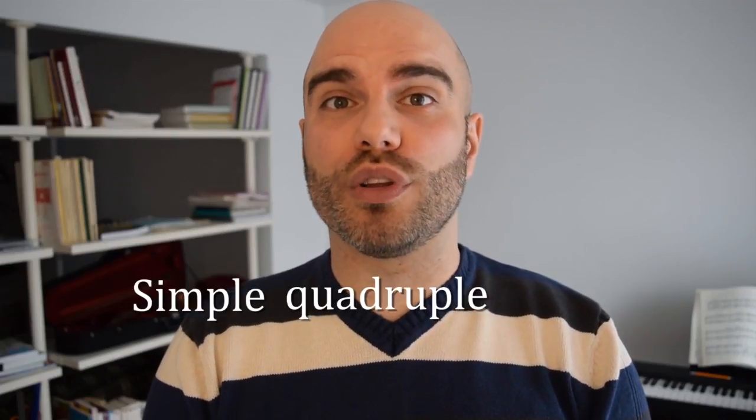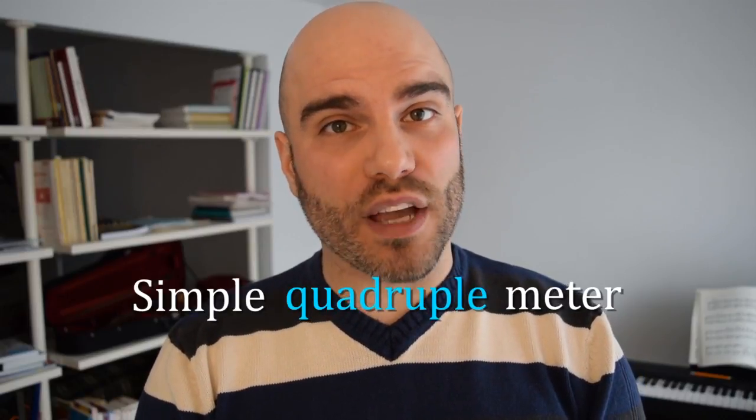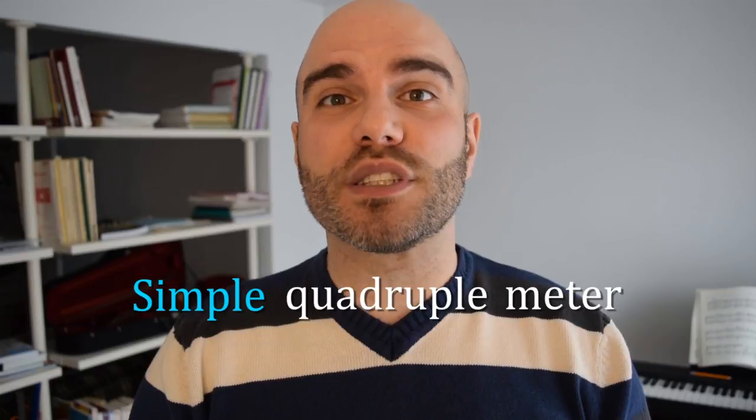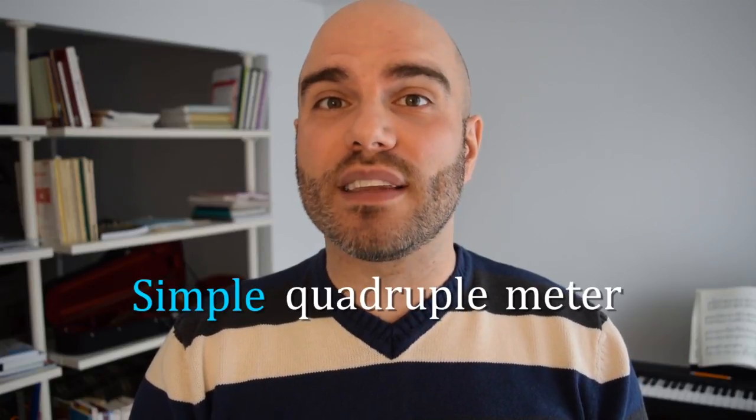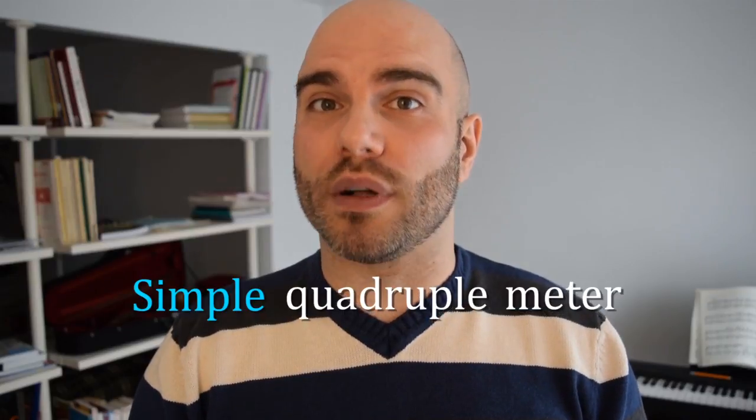What we have here is an example of simple quadruple meter. The term quadruple refers to the four beats per measure and the term simple refers to the simplest possible division of every beat into pulses, namely one beat split into two pulses.